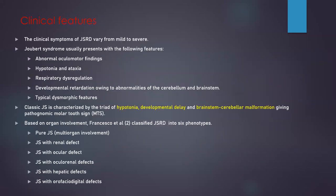The clinical features of Joubert syndrome-related disorders vary from mild to severe, and typically present with abnormal ocular findings such as nystagmus, strabismus, ptosis, hypotonia, and ataxia leading to gait abnormalities, respiratory dysregulation in the form of hyperpnea and apnea episodes — usually present in the neonatal period and gradually diminishing — developmental retardation due to abnormality of cerebellum and brainstem, and dysmorphic features such as hypertelorism, broad forehead, broad mouth with protrusion of tongue, or ptosis. The triad of Joubert syndrome includes hypotonia, developmental delay, and brainstem-cerebellar malformation giving the molar tooth sign.